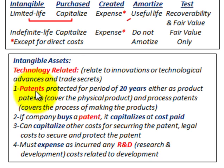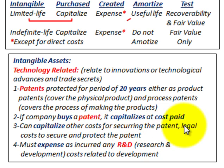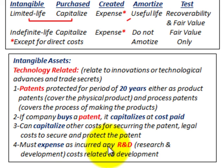For patents, they're protected for 20 years, either as a product patent — which covers the physical product — or as a process patent, which covers the process of making the products. If the company buys the patent, it capitalizes at the cost paid. You can also capitalize other costs for securing the patent, such as legal costs, though we don't have any in this example. You must expense as incurred any R&D or research and development costs related to the development of the intangible asset or patent.